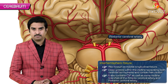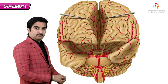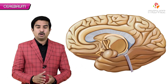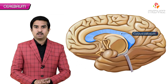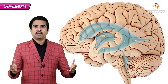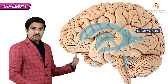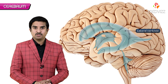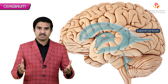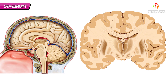The two hemispheres are connected to each other in the midline by an important bundle of white matter called the corpus callosum. Each hemisphere contains a cavity called the lateral ventricle, which contains cerebrospinal fluid. Now let us concentrate on the gross anatomy.